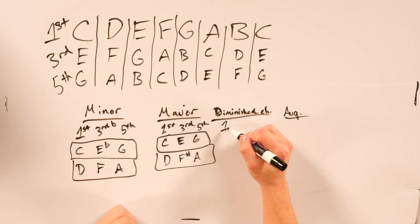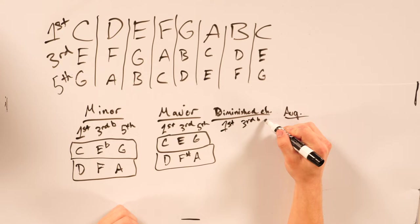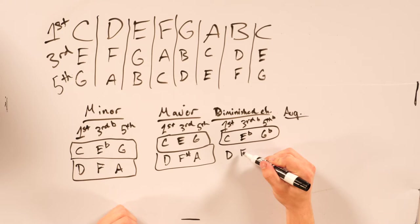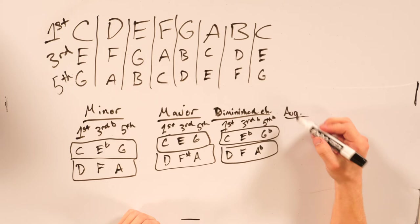So diminished chords: your first stays the same, your third gets flatted, and your fifth gets flatted. So for C, it would go C, E flat, G flat. For D, it would go D, F, A flat. And with your other keys, it'd be the same.